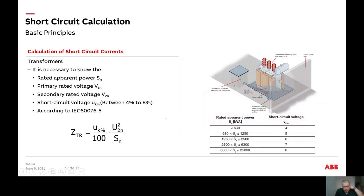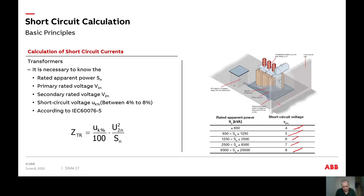For transformers, the short circuit voltage — denoted as Uk percentage — is usually between 4 to 8 percent depending on the size. Smaller transformers are around 4%, 630 kVA to 1.2 MVA is about 5%, up to 2.5 MVA is 6%, 6.3 MVA is 7%, and 25 MVA is 8%. Different transformer sizes have different short circuit voltages, so we need to take note of that.